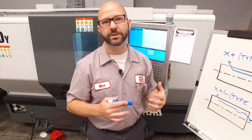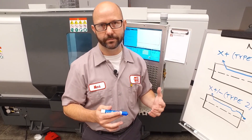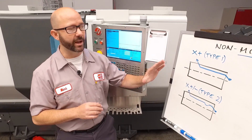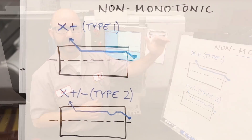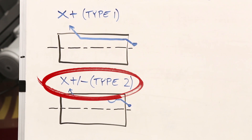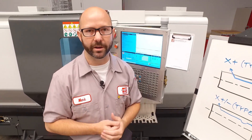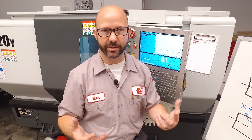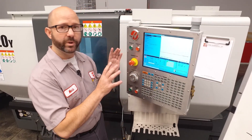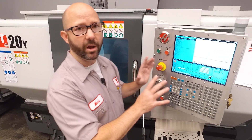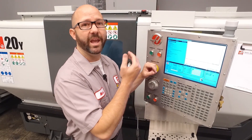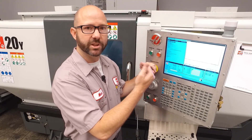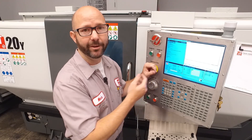You might see this on a part that has lots of grooves or valleys, like a pulley. So we've gotten a non-monotonic alarm. There might be a few different causes: we might be using the wrong type of cycle — a Type 1 instead of a Type 2 — or we might just have programmed the part incorrectly, trying to tell the machine to do some impossible feature. So how do we see what's going on if we can't run graphics? We're getting alarms which stop the program before we can see anything useful.